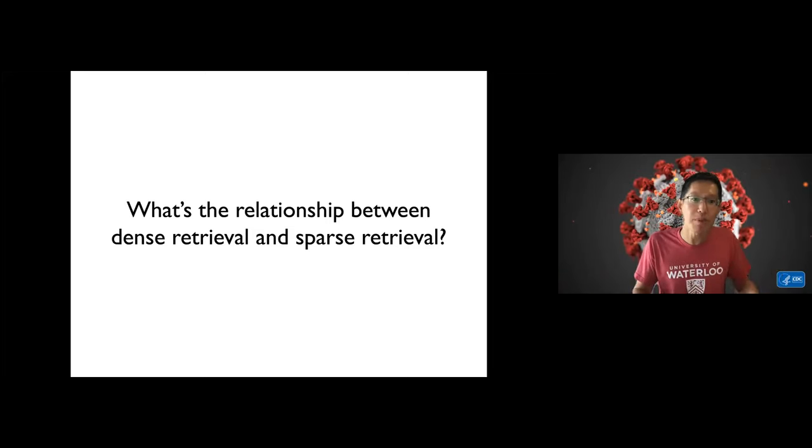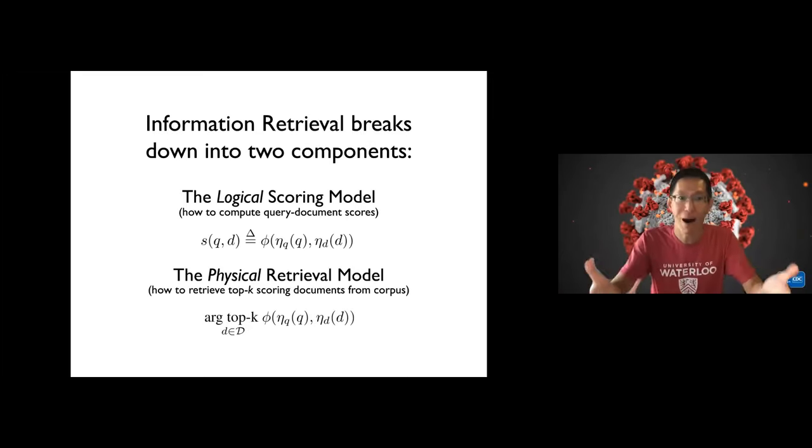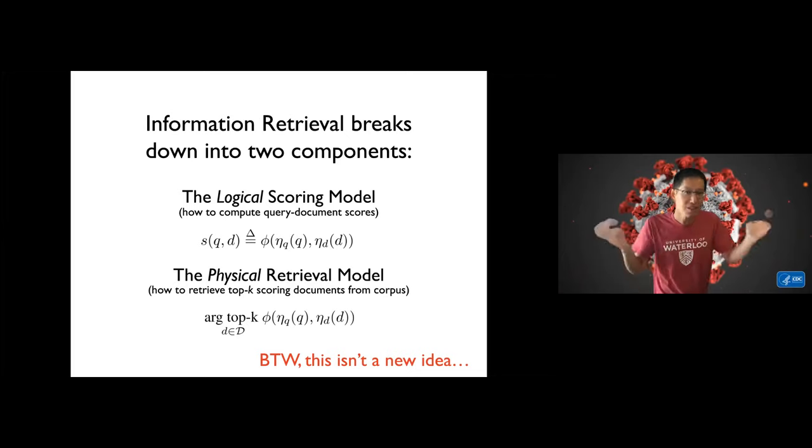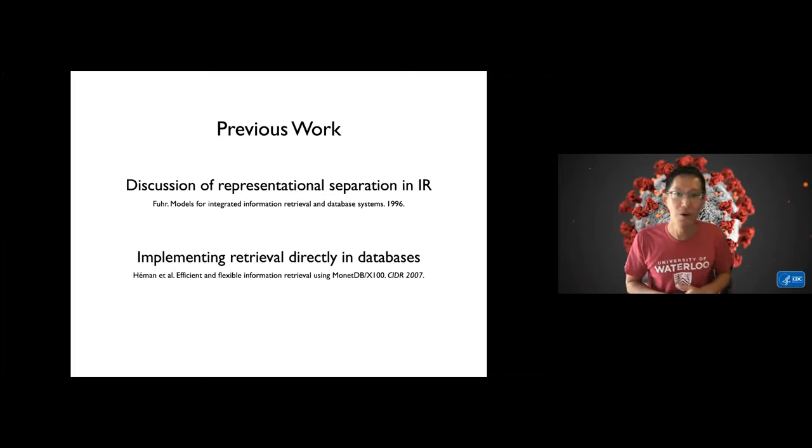BM25 bag of words are using inverted indexes, so document at a time query evaluation, something along those lines. But for dense retrieval it requires something completely different, something like HNSW hierarchical navigable small world graphs or something like that. So the question I want to answer is, what's the relationship between dense retrieval techniques and sort of the old bag of words BM25 sparse retrieval? The hint is I've already shared the answer. It's by breaking down information retrieval more precisely ad hoc retrieval into these two components, so logical scoring model and the physical retrieval model.